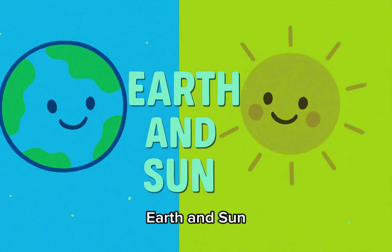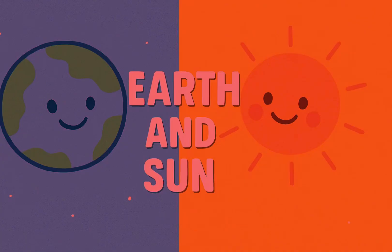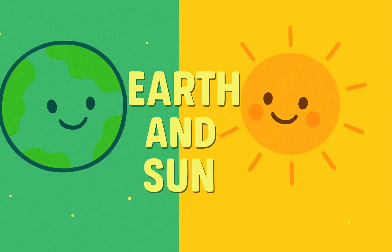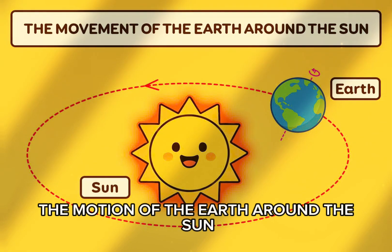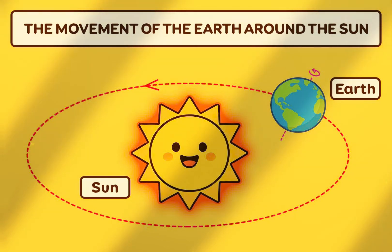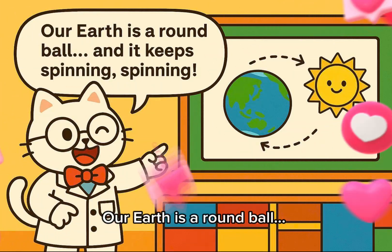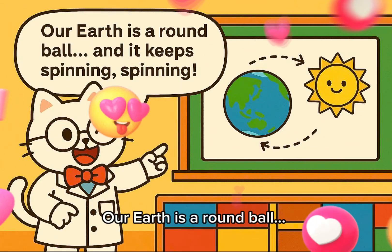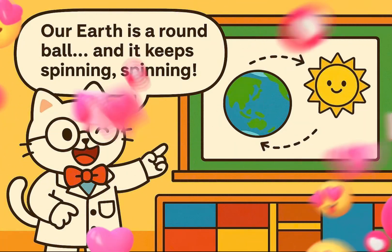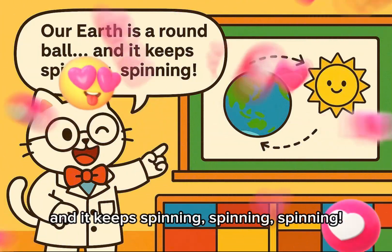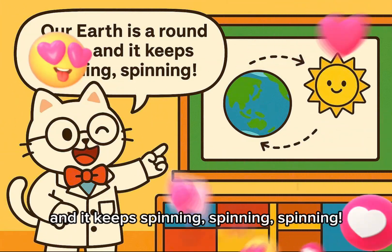Earth and sun. The motion of the earth around the sun. Our earth is a round ball, and it keeps spinning, spinning, spinning.